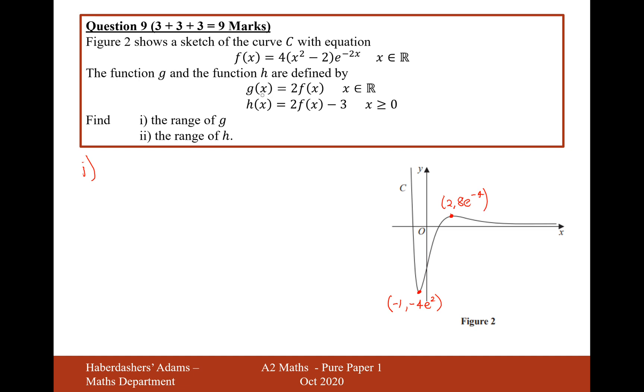So let's now find the range of the function g. The range of the function g would just be 2 times f(x), so that will stretch it upwards and downwards by a scale factor of 2. So the minimum points will now be at minus 8e to the 2, but it looks like the maximum won't ever be reached because that function on the left-hand side will just keep on increasing. So the range for g is just going to be g(x) is less than or equal to minus 8e to the 2.